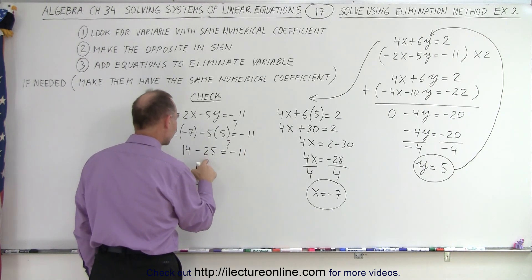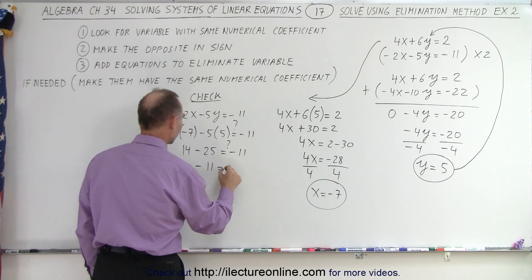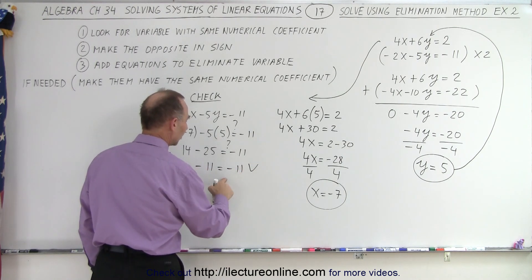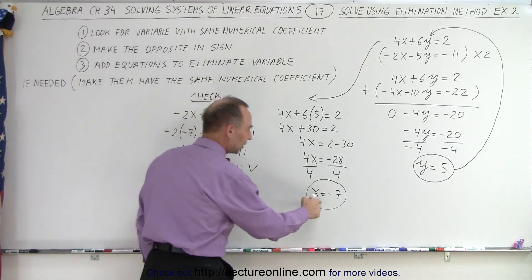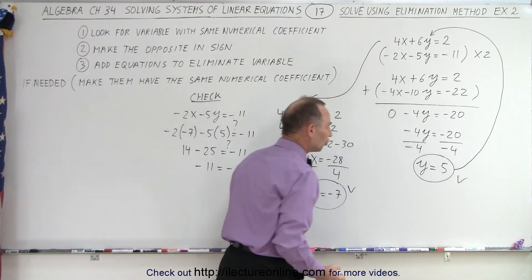So 14 minus 25, that's a minus 11, equals minus 11. Correct. So that is correct. Therefore, these are correct values, and I've found the solution. The solution is X equals negative 7, Y equals 5. And that is how it's done.